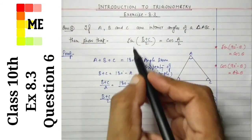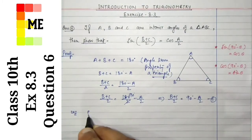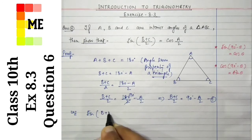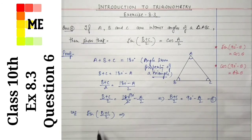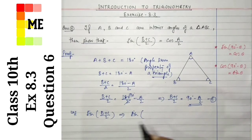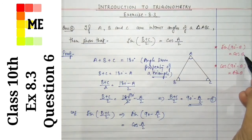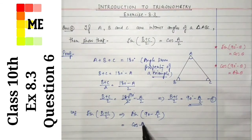Now, coming to the main question where we have to show that sine of B plus C by 2 is equal to cos A by 2. Taking the left hand side: sine of B plus C by 2. In place of B plus C by 2, we can write 90 minus A by 2 from equation 1. So, sine of 90 minus A by 2 is equal to cos A by 2, because sine of 90 minus theta is equal to cos theta.